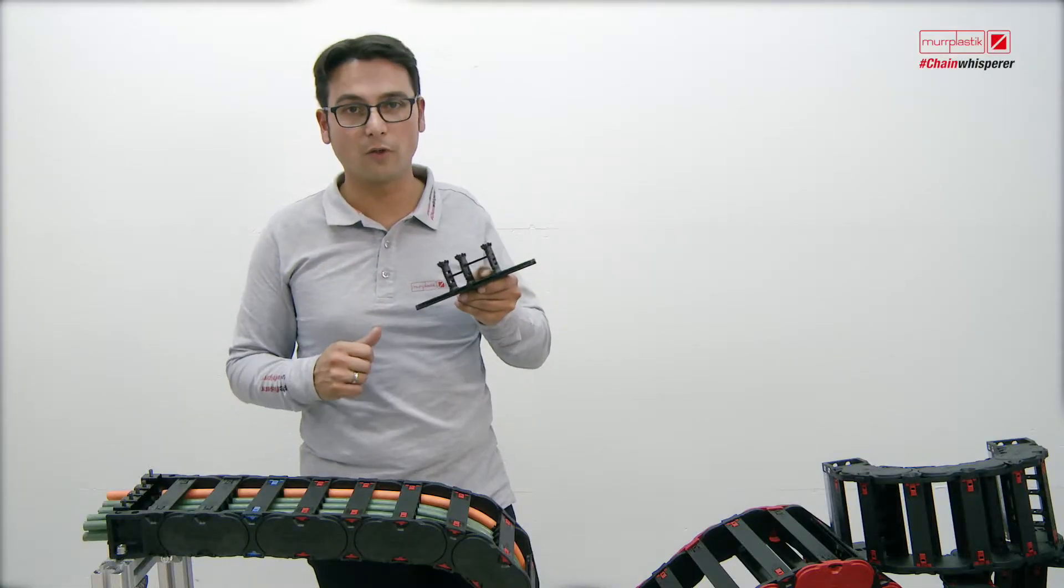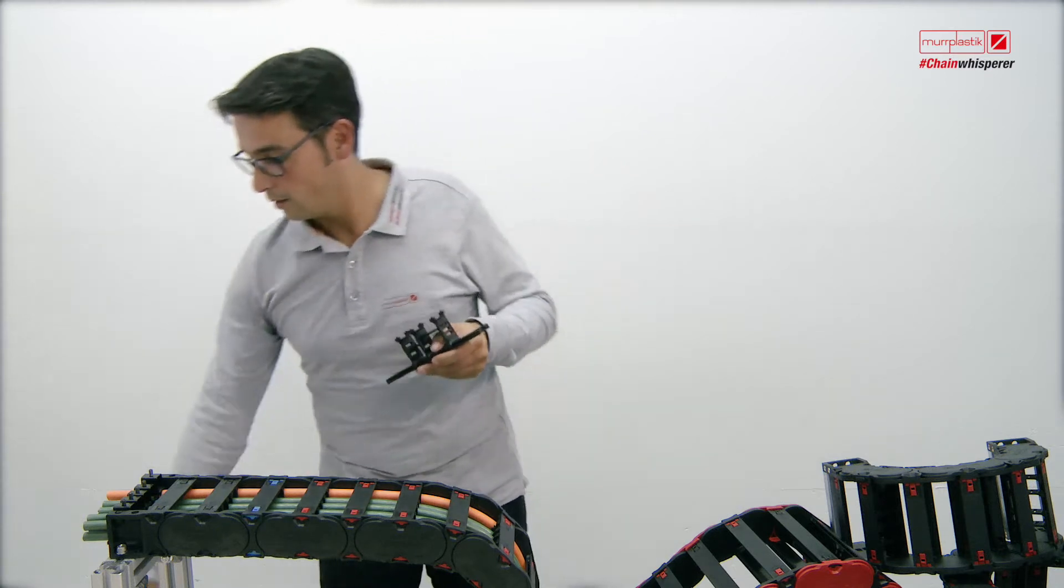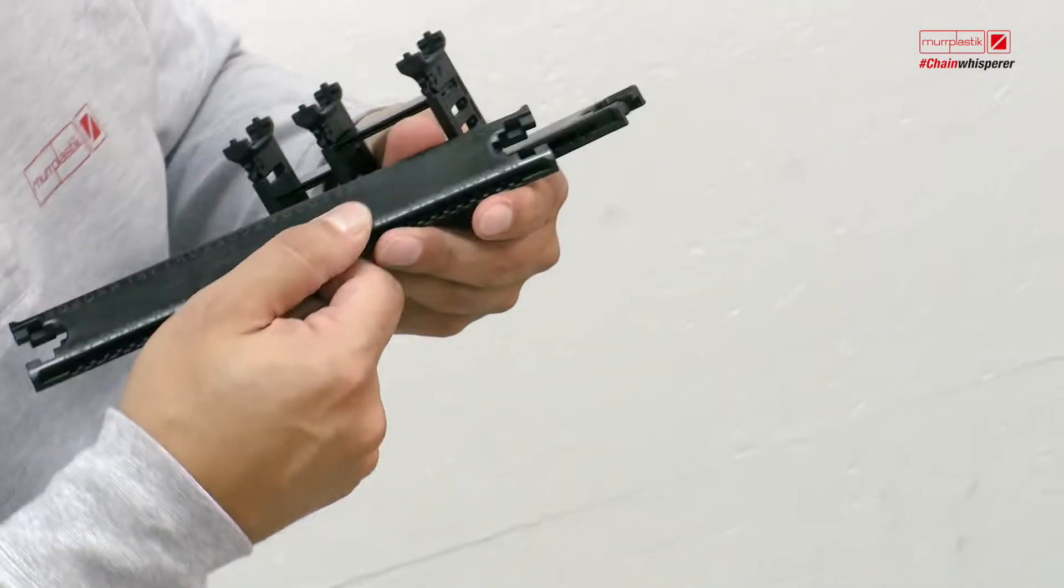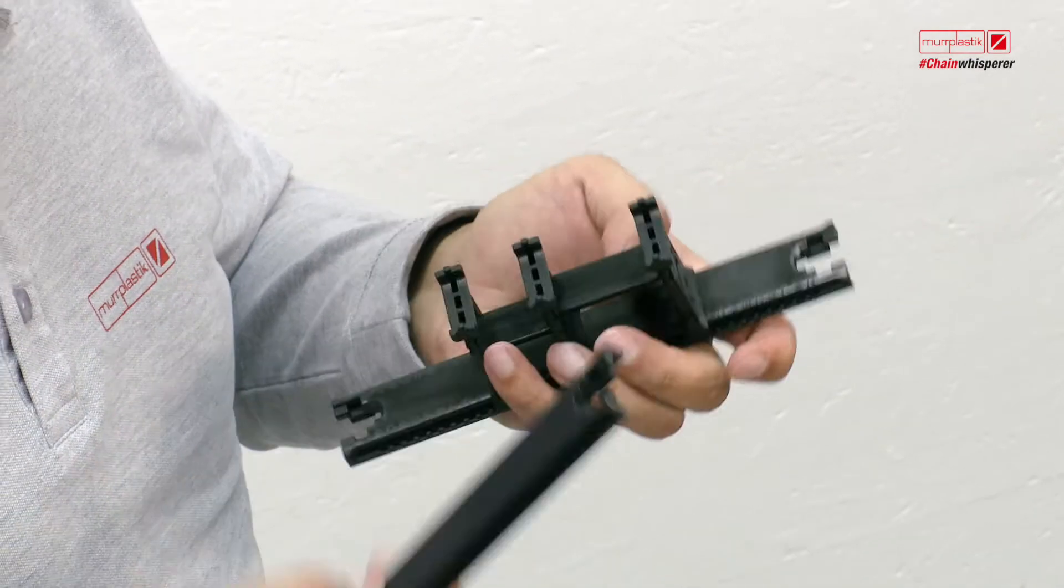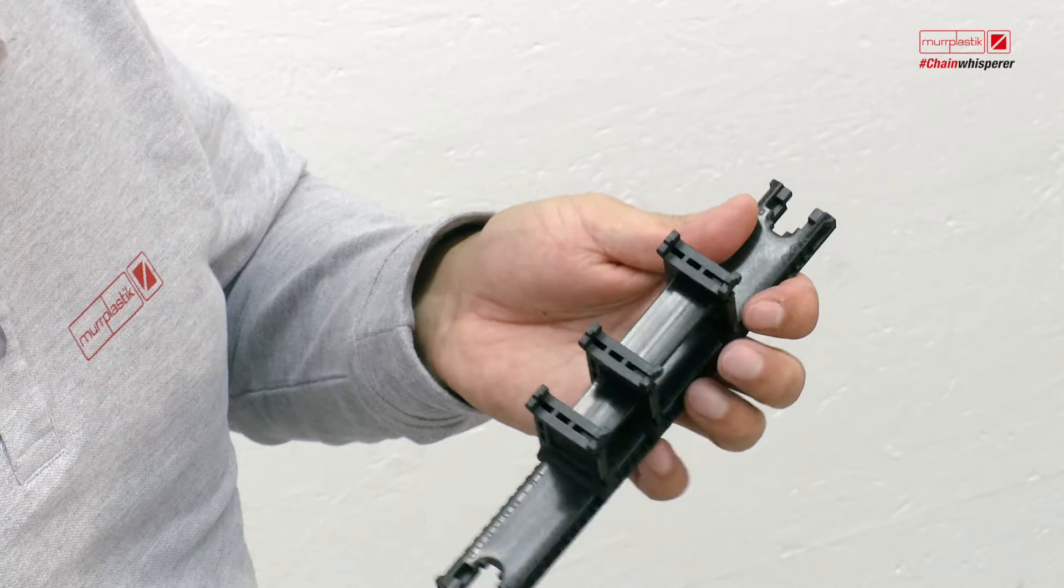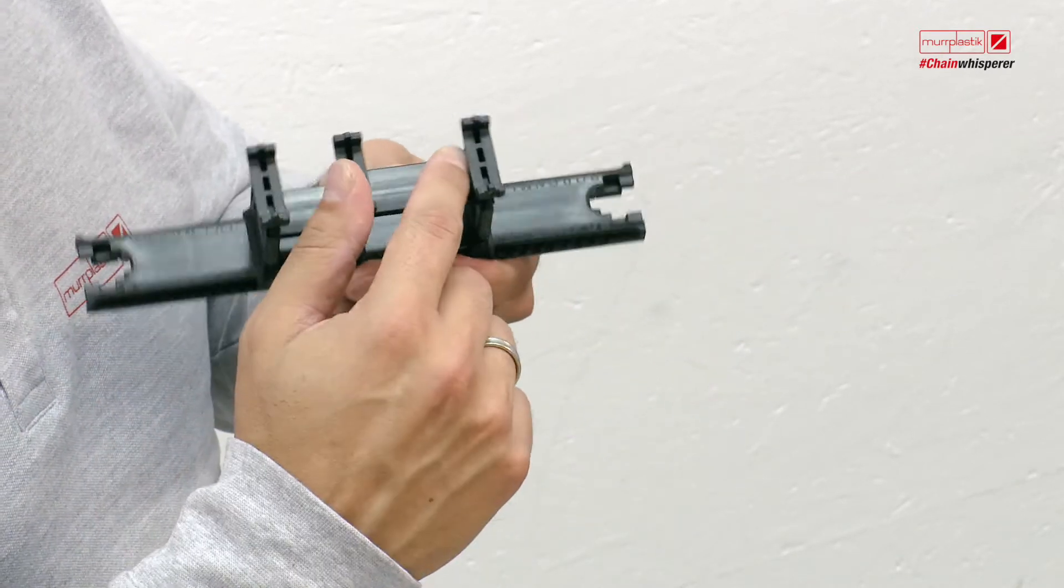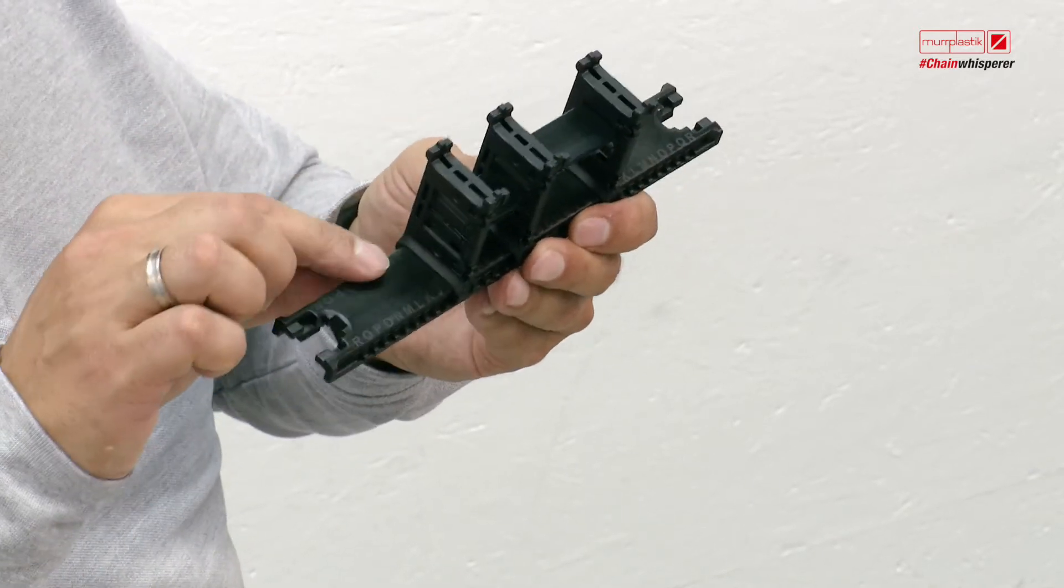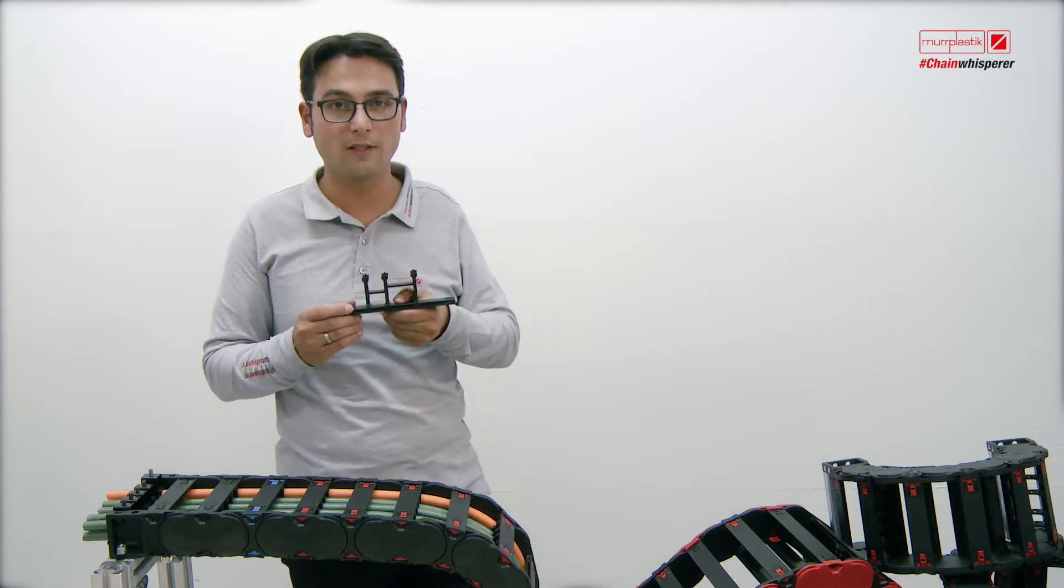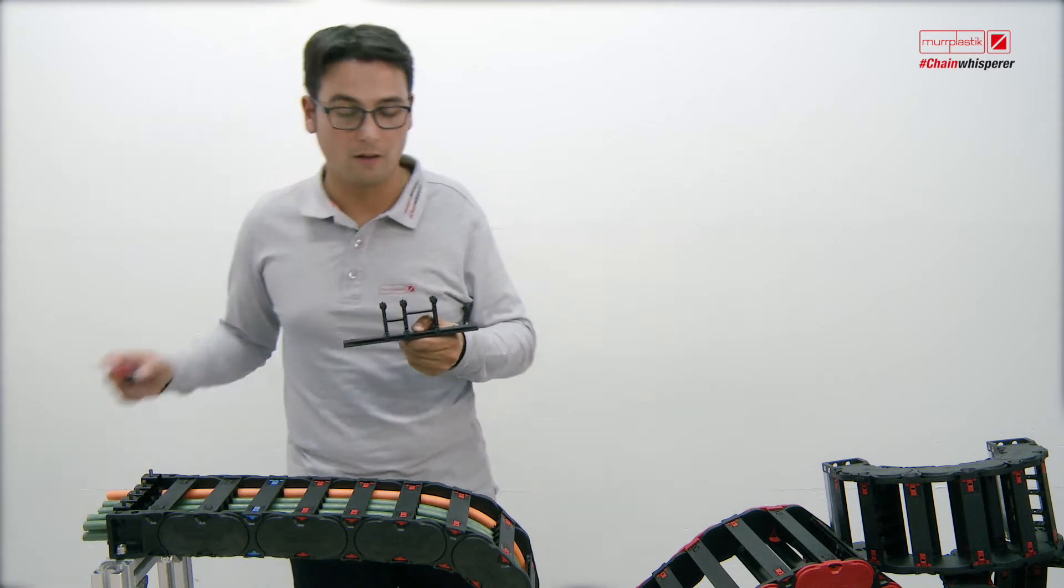Another very important point is the smooth surfaces on the inner side of the energy chain, on the crossbar, on the shelf, and also round shapes everywhere inside the energy chain. And all this is also possible with a simple screwdriver.